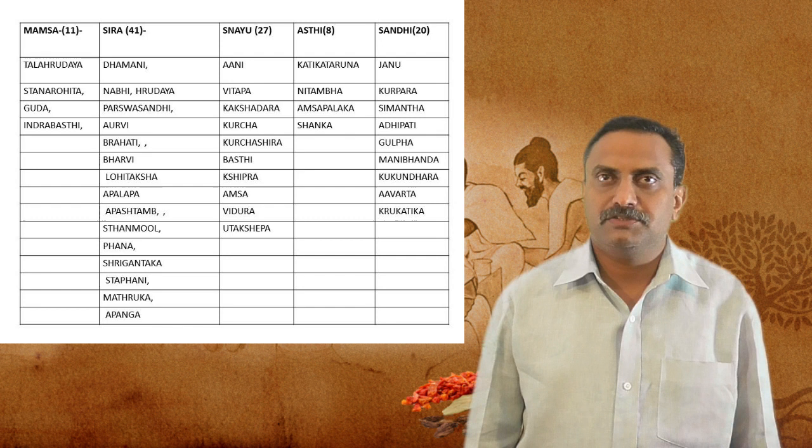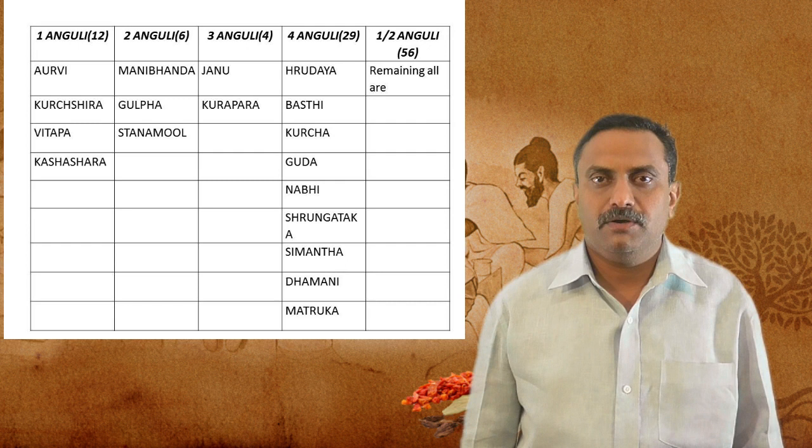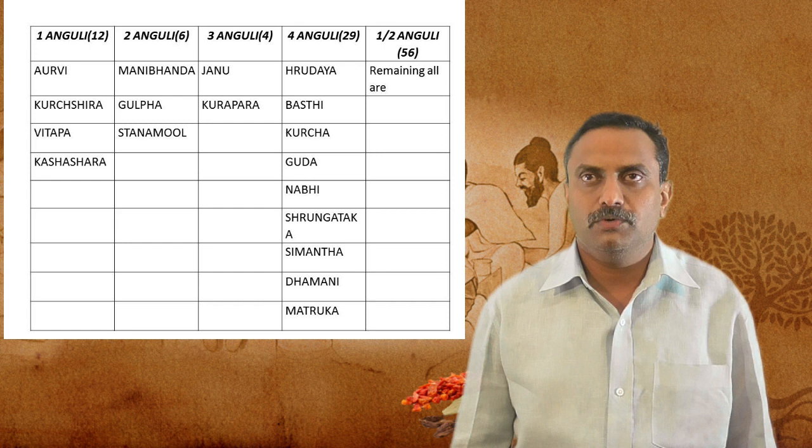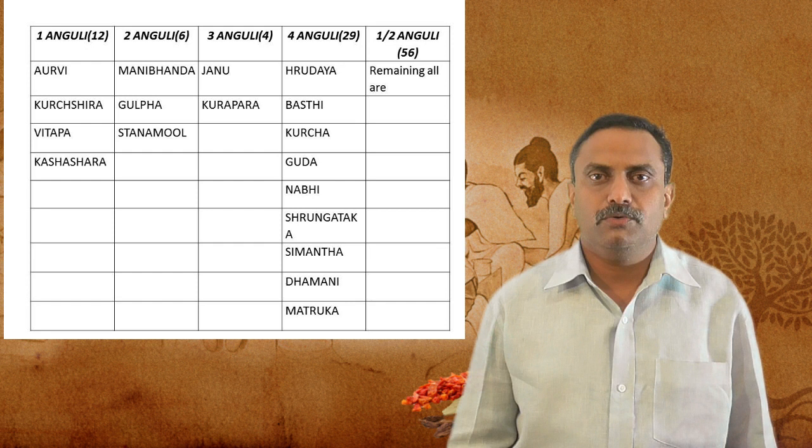According to Rachana (structural basis): Mamsa Marma — 11; Sira Marma — 41; Snayu Marma — 27; Asthi Marma — 8; Sandhi Marma — 20. According to Pramana (size), Marmas are classified as 1, 2, 3, 4, or half Anguli Pramana. The maximum in number are the half Anguli Pramana Marmas.